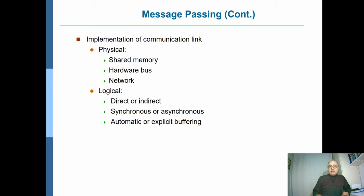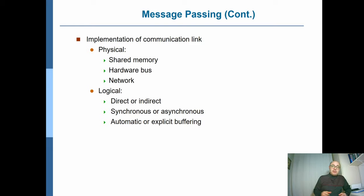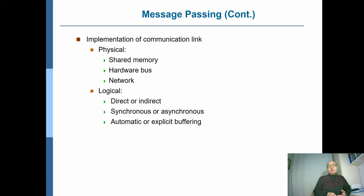For the implementation of the link between two processes, we can look at it from the physical perspective or the logical perspective. From the physical perspective, you could implement it over shared memory — the queue itself sits in shared memory, so when you say send, you're actually writing to an array in shared memory, and similarly for receive. Or it could be over the hardware bus, or over the network, as we'll discuss later. From the logical perspective, are we talking about direct communication between the two processes, or indirect communication where P sends somewhere and Q picks it up from that position? Also, are we talking about synchronous or asynchronous communications, and automatic or explicit buffering?